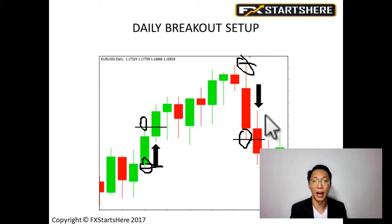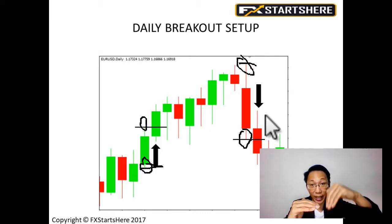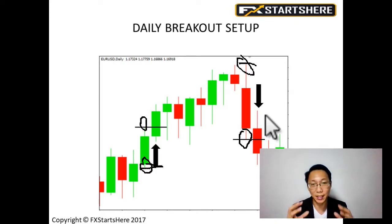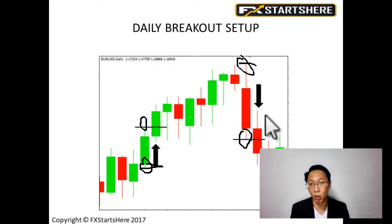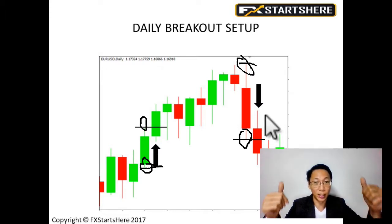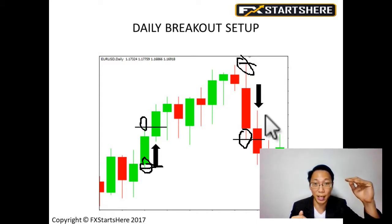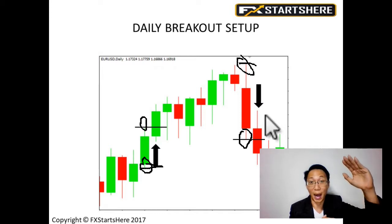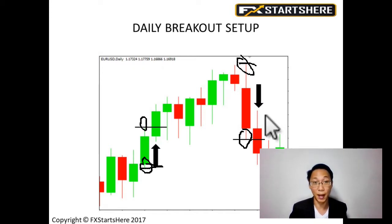Most of the time the trade will trigger in one direction — you want it to trigger in one direction. It's unlikely both the buy and the sell will trigger. Normally, in Singapore time, I start trading around 7 or 8 a.m. I turn on my chart and place my buy stop and sell stop based on yesterday's candle high or low. Whichever one is triggered — say the buy stop — I cancel off the sell stop, and vice versa.